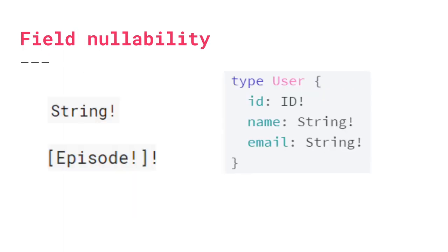The last thing I want to talk about is field nullability. In previous examples we saw types with fields and their scalar or object types, but we never saw the exclamation mark. What exactly is that? All it means is that this type cannot be null — under no circumstances can it be null; if it is, it will throw an exception. If there is no exclamation mark, it's saying it could be null and no exception would be thrown. For example, a list of episode objects with exclamation marks on both the list and the elements means the whole list cannot be null, and the episode objects inside also cannot be null.